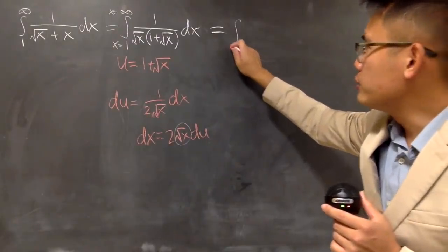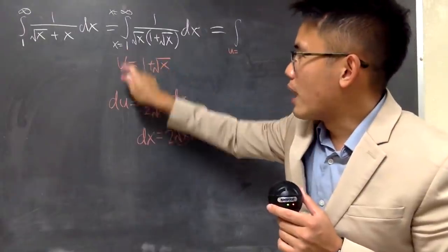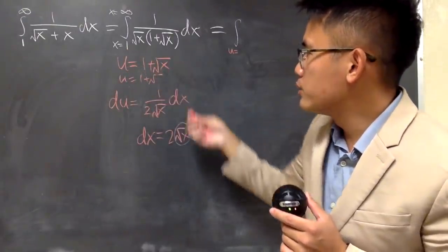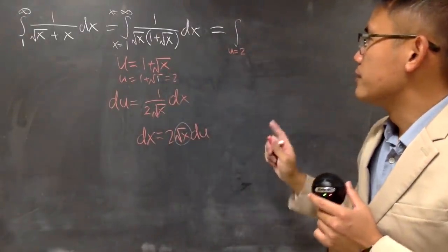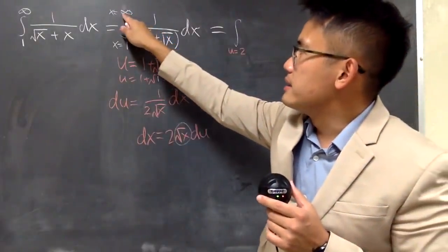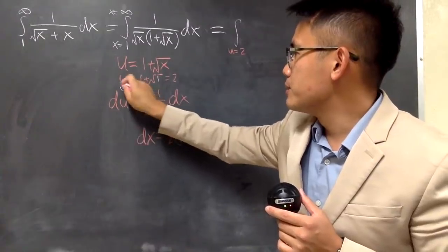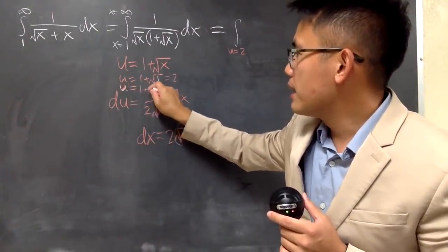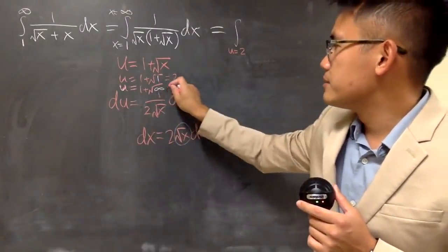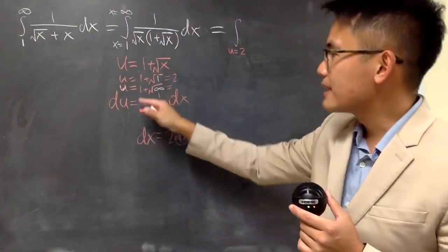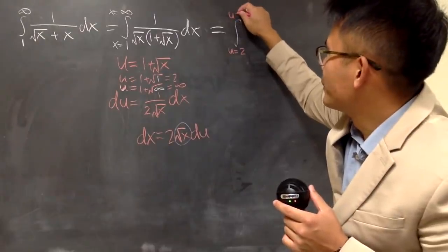When x is equal to 1, u will be 1 plus square root of 1, which that will give me 2. So, u goes from 2. And when x is infinity, plug into here, you get u equals to 1 plus square root of infinity. And we see that square root of infinity is infinity, plus 1 is still infinity. So, u goes from 2 to infinity, right here.